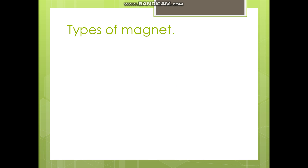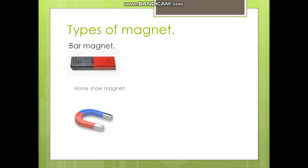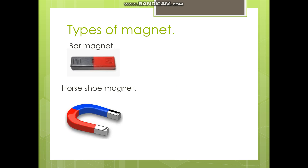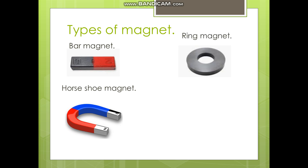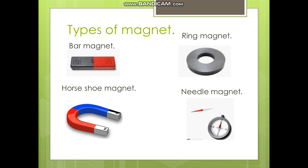Before moving further, we will see some types of magnets. Among them, the first is the bar magnet. The second type of magnet is the horseshoe magnet. Next are the ring magnet and the needle magnet.